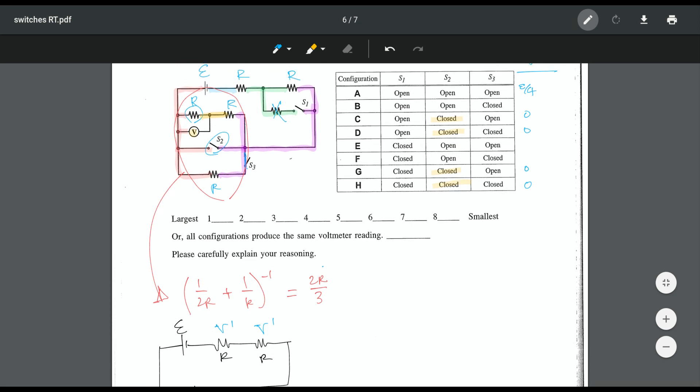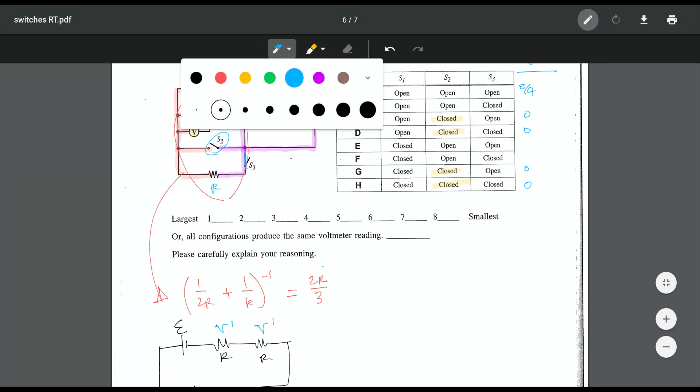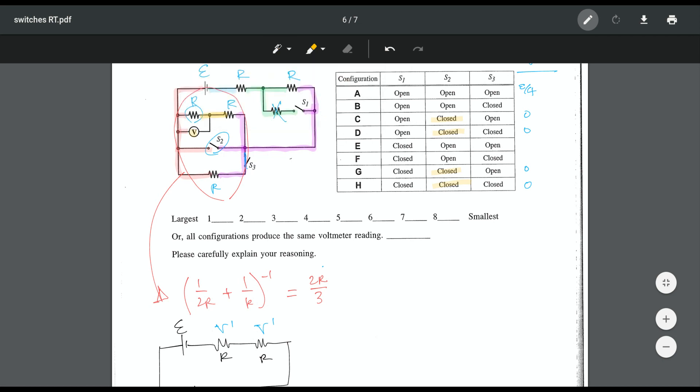Okay, so that means the drop over what I've circled in red up here is 2 thirds V prime. Notice that this little piece in here is just going to be half of that 2 thirds.